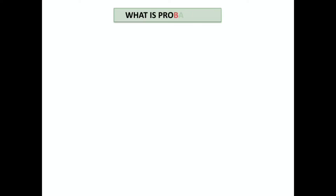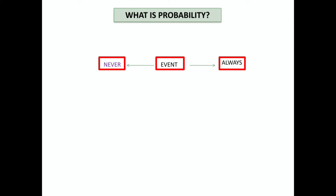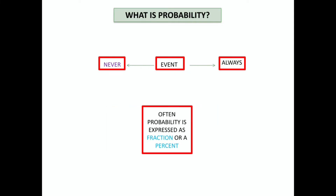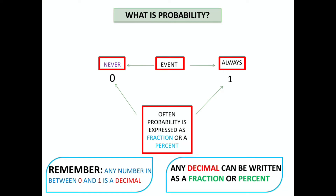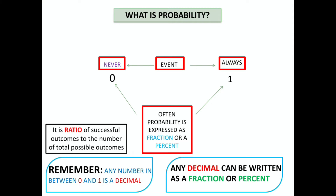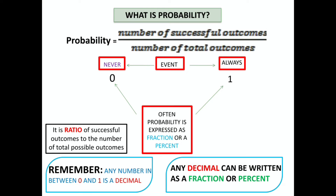Now, what is probability? If we have an event, it may never happen, always happen, or be somewhere in between. Probability is often expressed as a fraction or a percent. If it is never happening, we say it is 0, which is an impossible event. If it always happens, we say it is 1, that is certain. Any number in between 0 and 1 is a decimal, which can be expressed as a fraction or percent. So probability is the ratio of successful outcomes to the total number of possible outcomes — that is, number of successful outcomes divided by number of total outcomes.